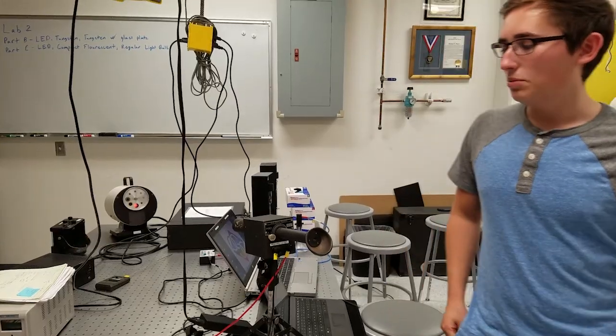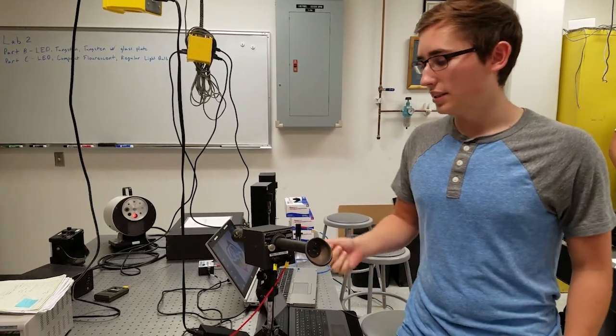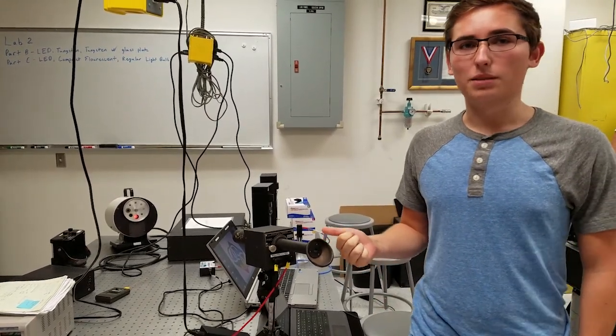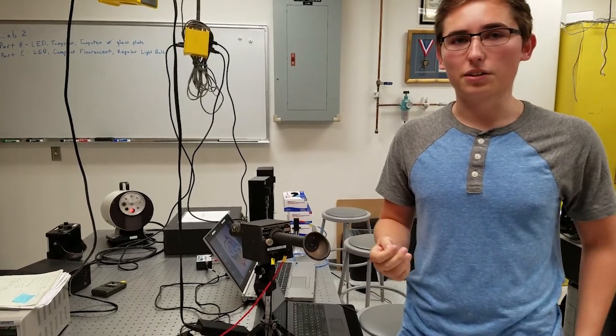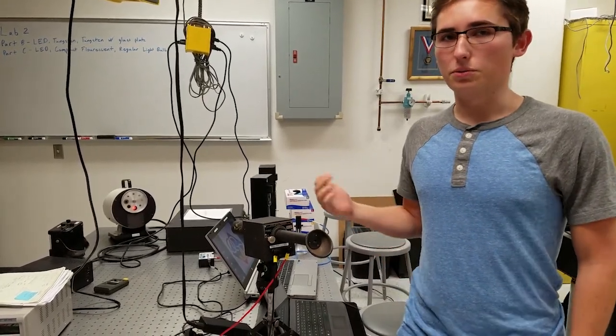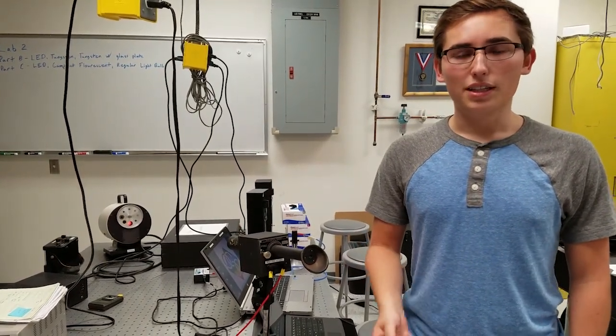For this part of the lab, we're using a pyrometer to measure the temperature of a blackbody source. The way this works is that there's a blackbody filament within the pyrometer, and if you change the amount of current flowing through it, it will emit in a different color, and you can compare that color to whatever source you're trying to measure in order to determine its temperature.